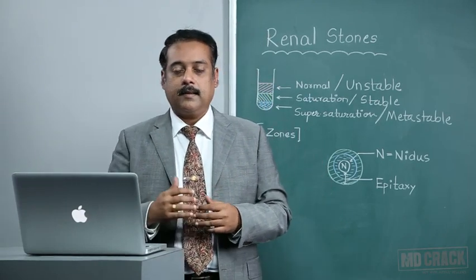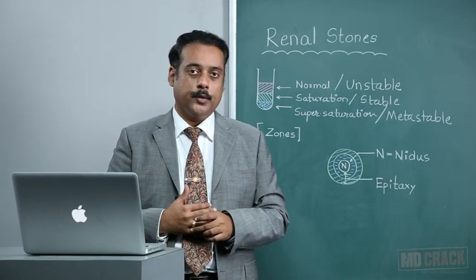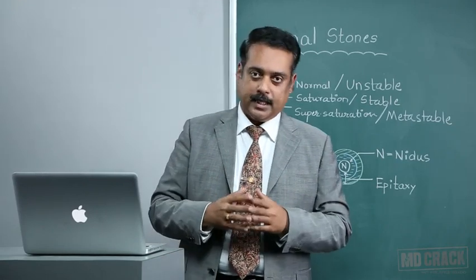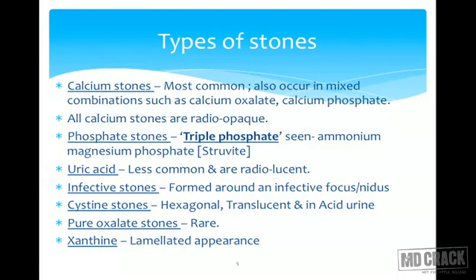The most common stones are calcium stones, also occurring in combination as calcium oxalate or calcium phosphate. All calcium stones are radiopaque. 80 to 85 percent of urinary stones are radiopaque, and only 10 to 15 percent are radiolucent, seen as a filling defect on plain x-ray. Calcium contributes the main radio-opacity of the shadow.